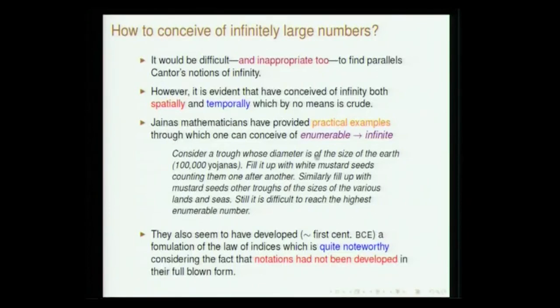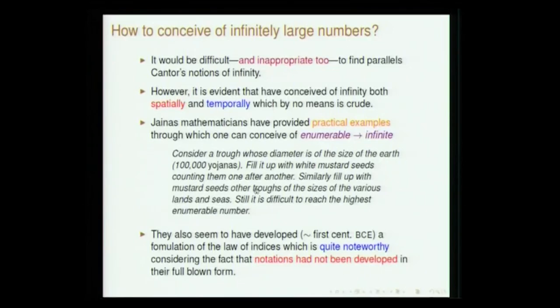There are interesting examples the Jainas chose to convey what infinity is. For instance: consider a trough whose diameter is the size of the earth — 1 lakh Yojanas. Fill it with white mustard seeds and keep counting them. Similarly fill troughs of the size of various lands and seas with mustard seeds. Still, it is difficult to reach the highest enumerable number. This gives a conception of how large these numbers are.